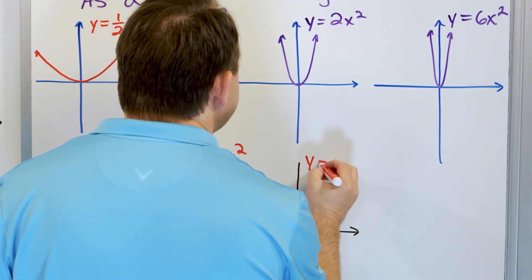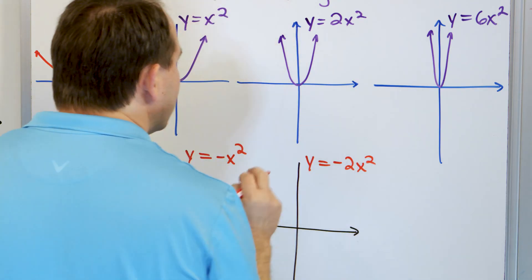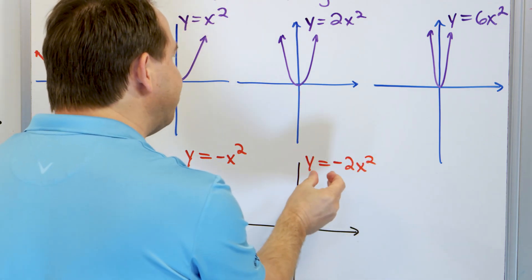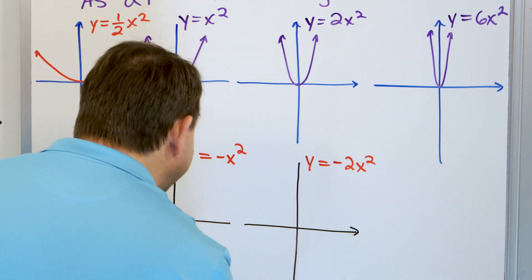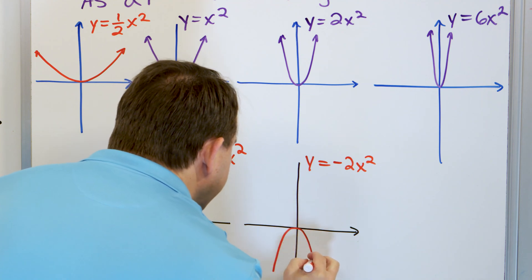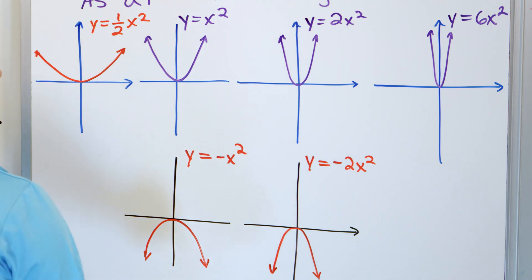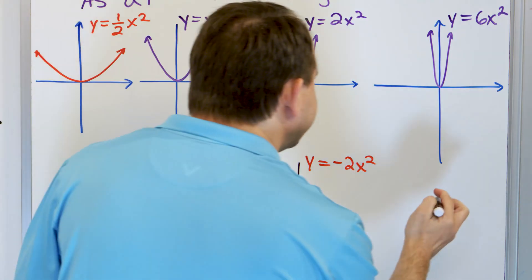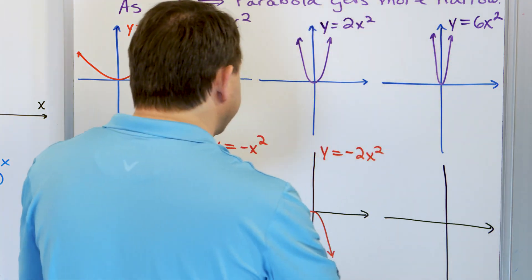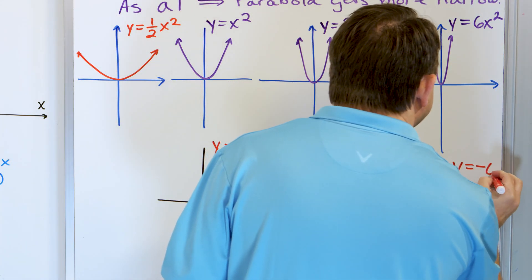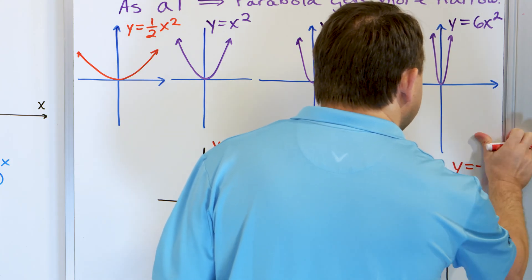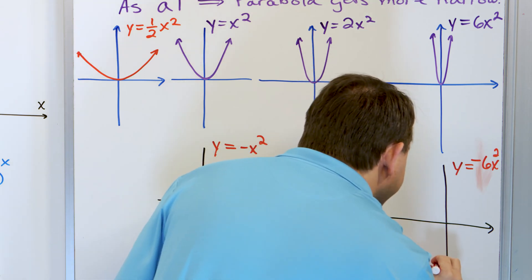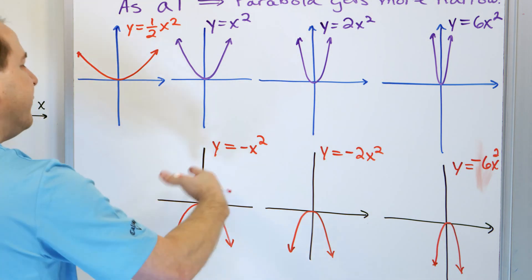What if instead of 2x squared it's negative 2x squared? The negative sign means it opens down, but the absolute value of the coefficient is 2, which means it's steeper — a mirror image of the 2x squared parabola above. So it'll be crunched up a bit more downward. And for negative 6x squared, it opens downward and is even steeper, basically a flipped version of the 6x squared parabola.